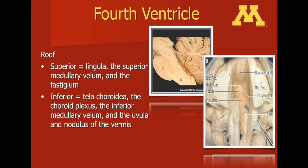Here's an additional view into the fourth ventricle. One can see the choroid plexus, which is lying on top of the inferior medullary valum. Above that, you can see the superior medullary valum.